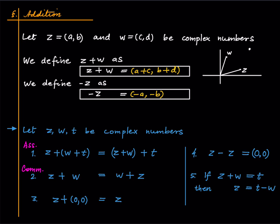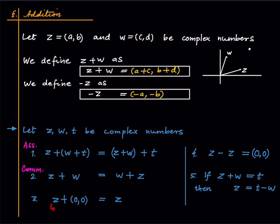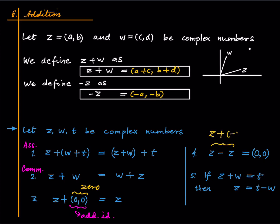Again, familiar from real numbers. The third property says that the particular complex number which is the origin does not disturb any other complex number under addition. So it behaves like the number zero in the real context — this is called the additive identity. We simply call it zero because it behaves like our familiar zero. We have Z minus Z is zero, and Z minus Z is shorthand for Z plus (minus Z), just like in real numbers when we write 2 minus 3 we really mean 2 plus (minus 3). It is immediate that this gives 0 comma 0.